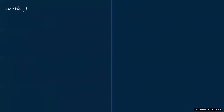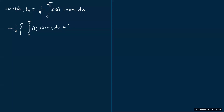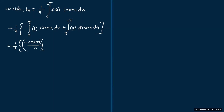Now calculating bₙ using the regular formula: bₙ equals one by pi times the integral from zero to two pi of f(x) sin(nx) dx. Splitting into two integrals: one by pi times the integral from zero to pi of one times sin(nx) dx plus the integral from pi to two pi of zero times sin(nx) dx. Integrating sin(nx) gives minus cos(nx) divided by n, with limits from zero to pi.